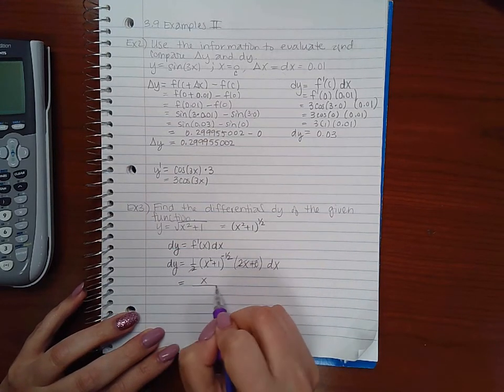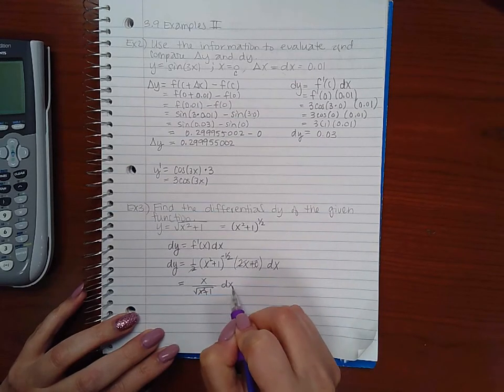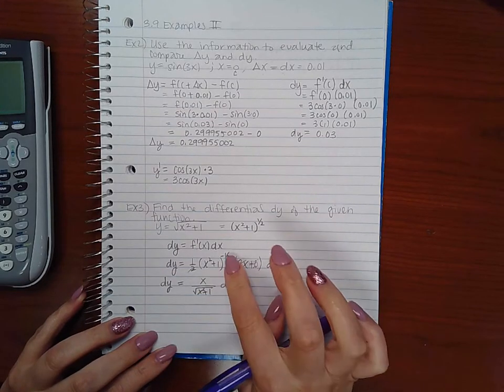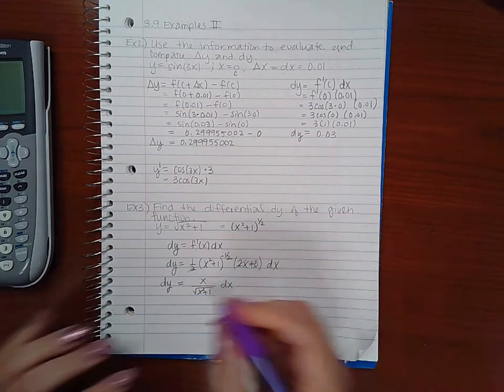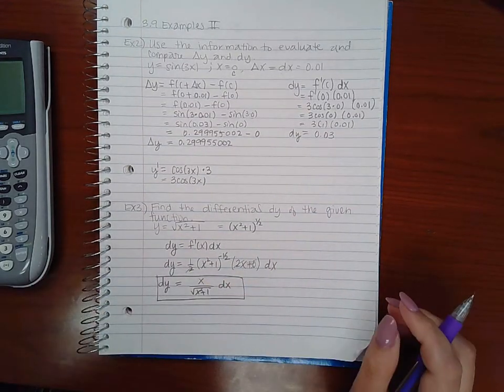And I get x over the square root of x squared plus 1 times dx. Negative means it's downstairs and a 1 half means it's a square root. So this is what we end up with here for our answer.